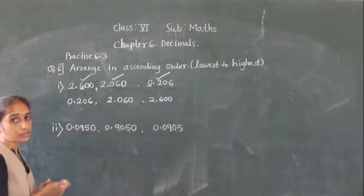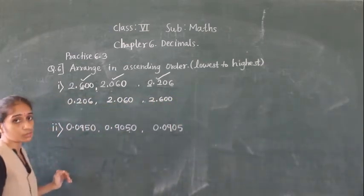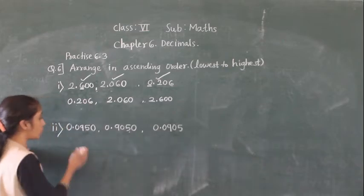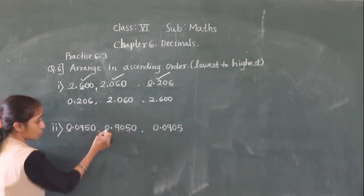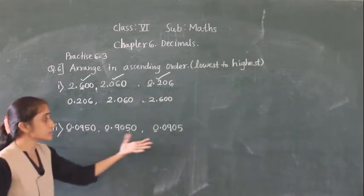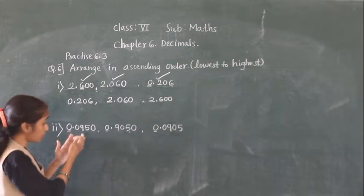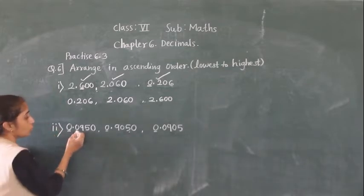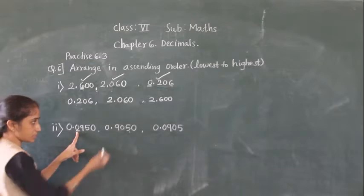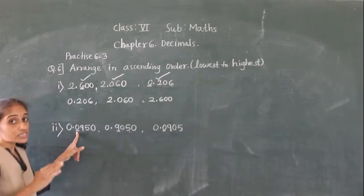Now compare the numbers and arrange lowest to highest. First compare the whole number part: 0, 0, 0 — all the same. So compare the tenths place after the decimal point. At the tenths place here it is 0, here it is 9, and here it is 0. Since 9 is the greatest, we set that number aside.